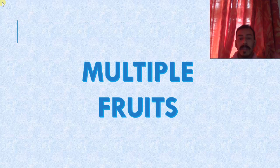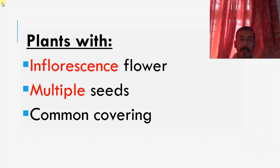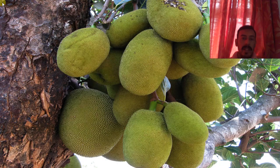Next, we will deal with multiple fruits. So what type of plants are these? They have inflorescence flowers and they have multiple seeds. And usually they have a common covering covering the entire fruits. Having inflorescence flowers means small, small flowers in a bunch. And from that, we are getting multiple fruits. And these all fruits are in a single covering. That's how multiple fruit works. This is an example.